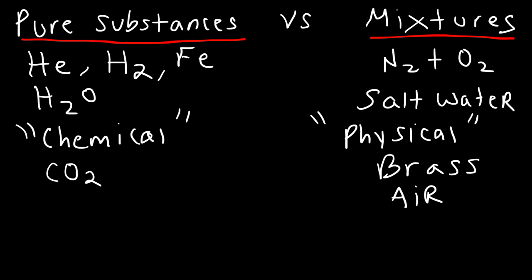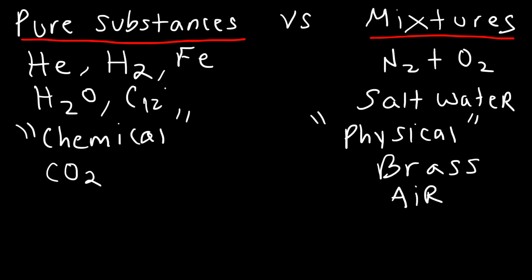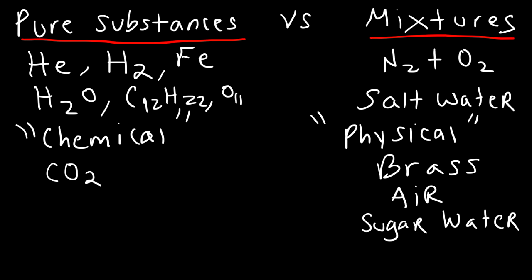Sugar is a pure substance. Glucose is C6H12O6, and table sugar — sucrose — is C12H22O11. Sugar is a single compound, making it a pure substance. Sugar water, on the other hand, is a mixture of sugar and water, so that is not a pure substance.